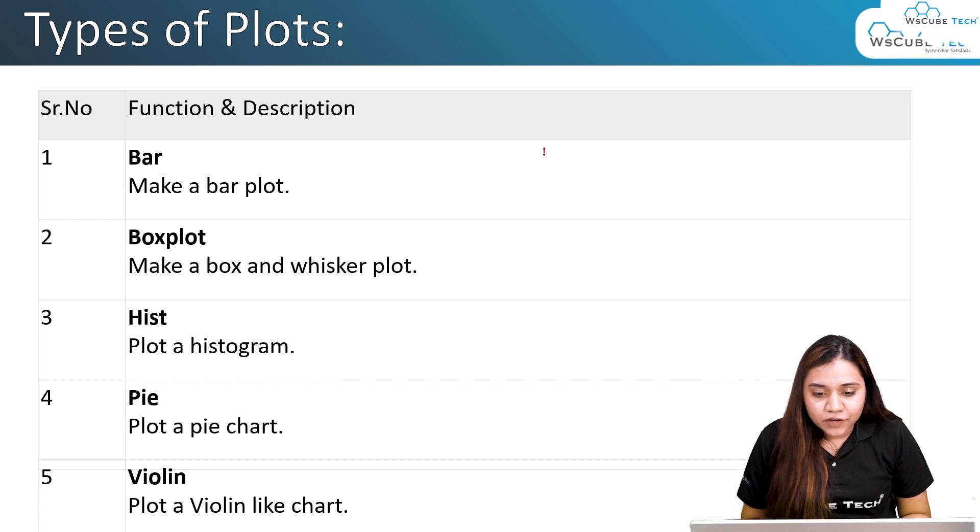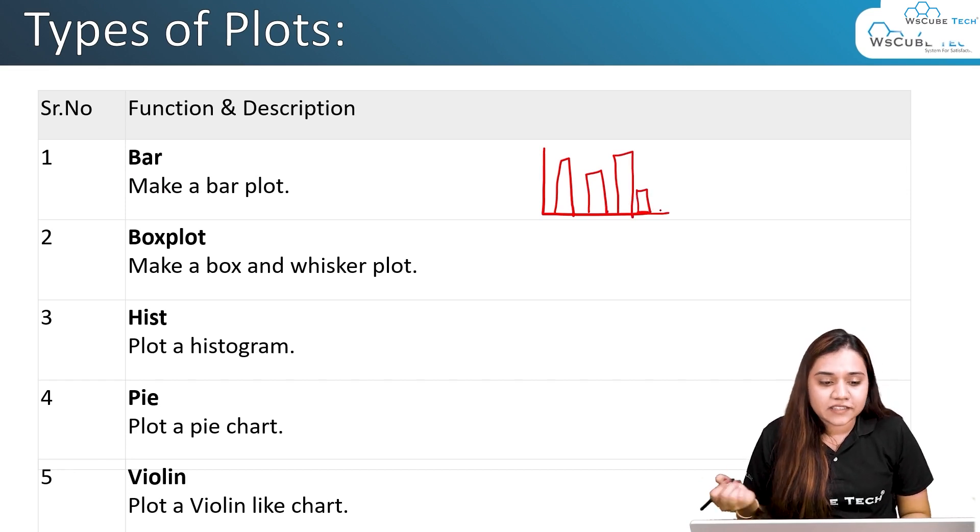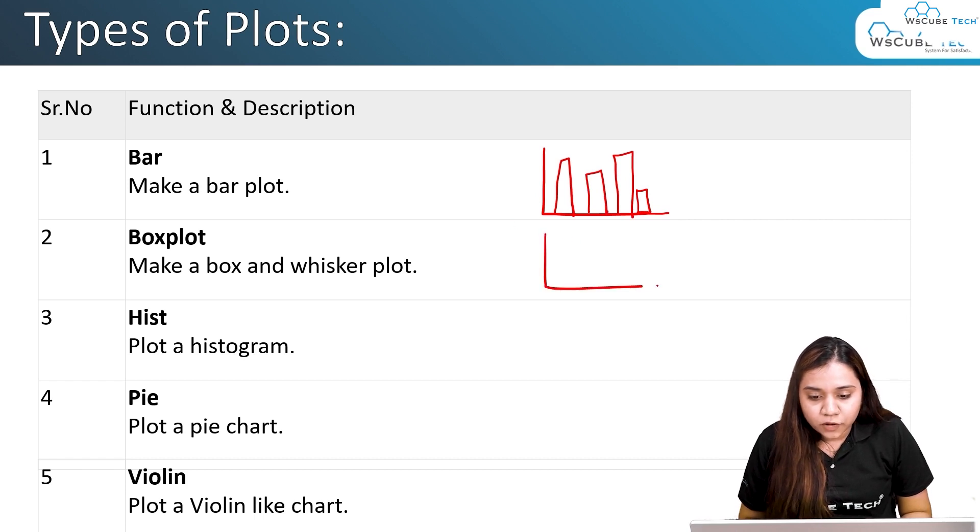First of all, over here is a bar plot. How does a bar plot look like? It has some bars that we have been studying. We have seen these kinds of plots in 9th grade, 10th grade. Next, a box plot looks like this, there is a box in it. I will be talking about it in detail later, but this is how the box plot looks.